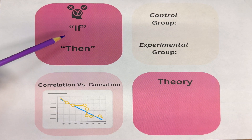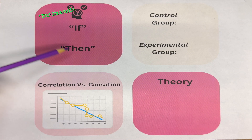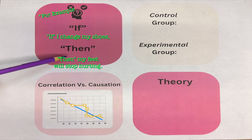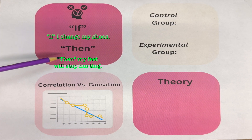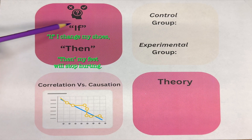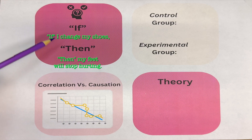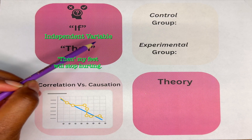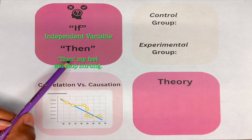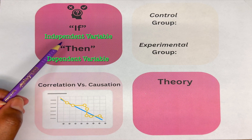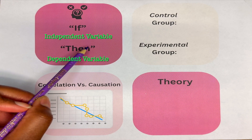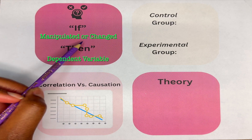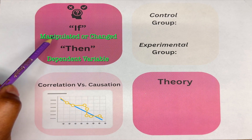For example: if I change my shoes, then my feet would stop hurting. In the hypothesis statement, the 'if' part is known as your independent variable, while the 'then' is your dependent variable. The independent variable is the variable that can actually be manipulated or changed — in this case, the shoes.